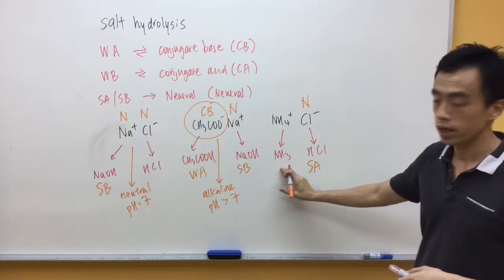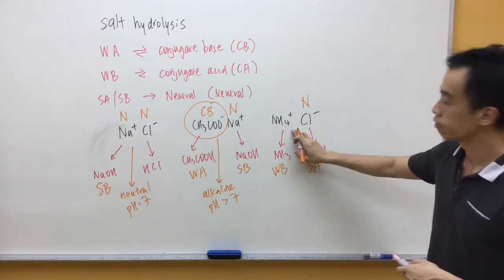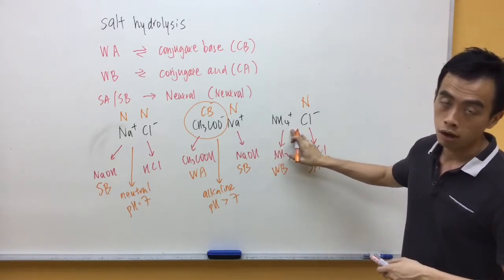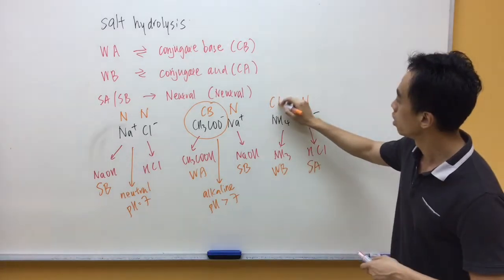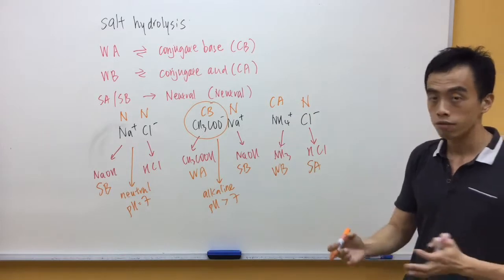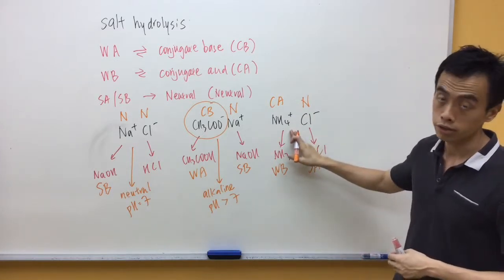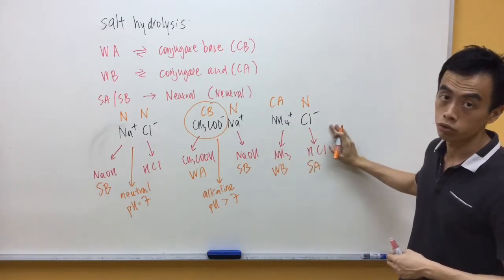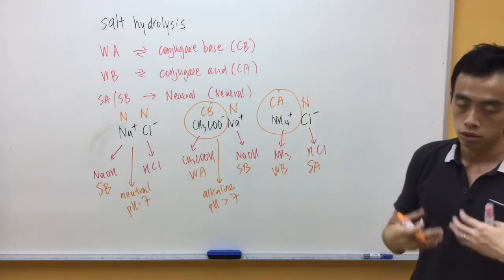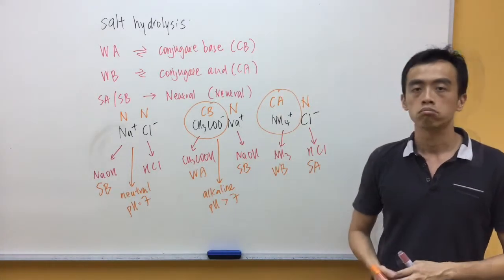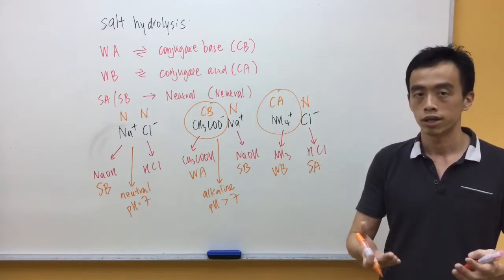Now, NH3 is a weak base. Therefore, the counter ion form for ammonia, which is a weak base, is a conjugate acid. What we have is NH4+ which is a conjugate acid, Cl- which is neutral. Because NH4+ is a conjugate acid, it will dissociate in solution to form H+. Therefore, the solution is acidic.